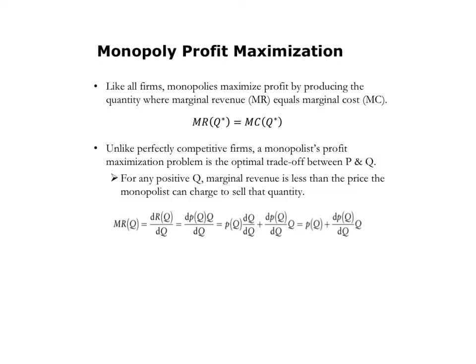That is, the monopoly can choose price, but the higher the price it charges, the lower the quantity demanded, and so the higher the price the monopolist charges, the less it will sell. That's the trade-off between price and quantity that a monopolist faces that a perfectly competitive firm did not.